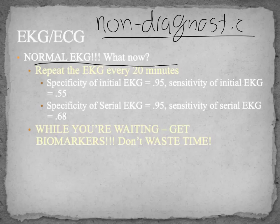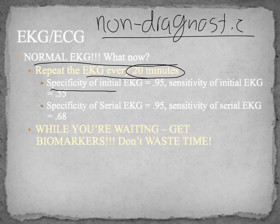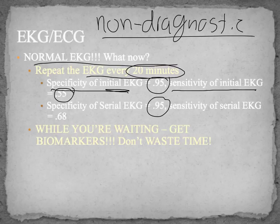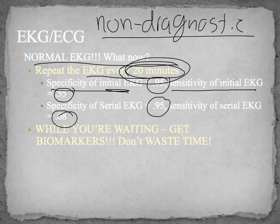Why repeat every 20 minutes? Because of the math: the specificity for an initial EKG is 0.95, or 95%. The sensitivity of an initial EKG, however, is only 0.55. With serial EKGs, the specificity stays the same, but sensitivity increases by about 13%. So you're going to redo it every 20 minutes — serial EKGs — but while you're waiting, you're also going to take some blood.